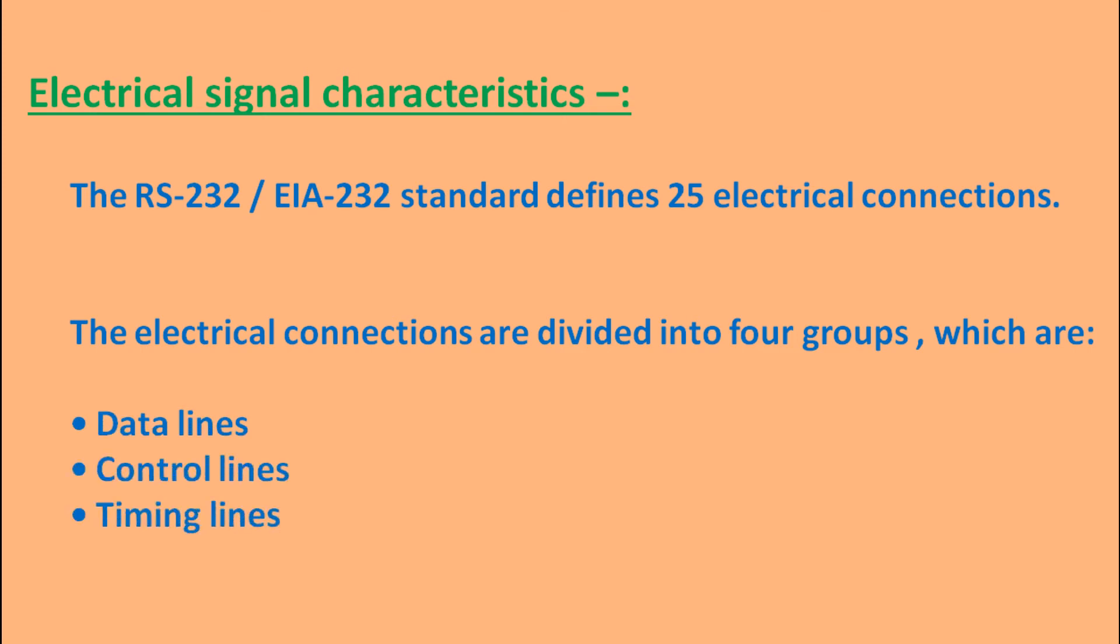The electrical connections are divided into four groups which are data lines, control lines, timing lines, and special secondary functions. Out of these we will concentrate on two types of lines only that is data lines and control lines because these two are essential for fundamental understanding of RS232 standard.